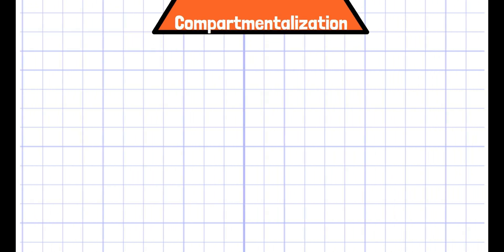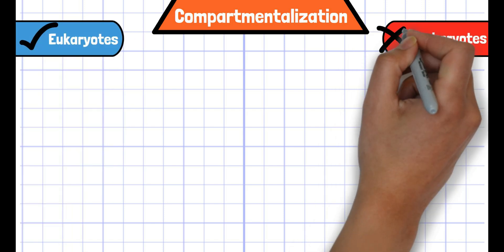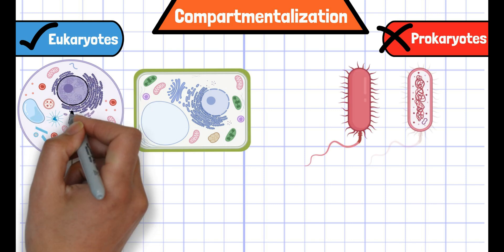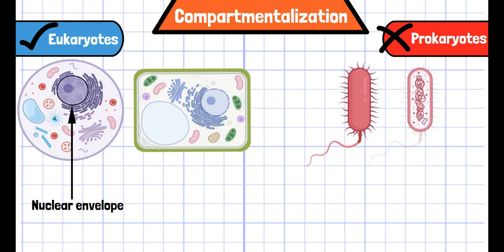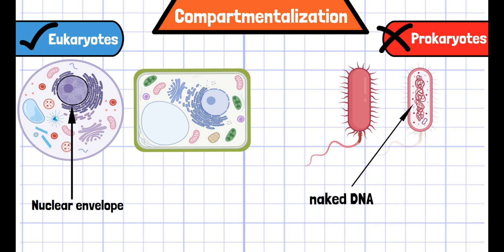The biggest difference is compartmentalization. Compartmentalization exists in eukaryotes, but not in prokaryotes. Due to this feature, there is a nuclear envelope which surrounds DNA in eukaryotes, but prokaryotes do not have them. Instead, prokaryotic DNA is usually referred to as naked DNA.